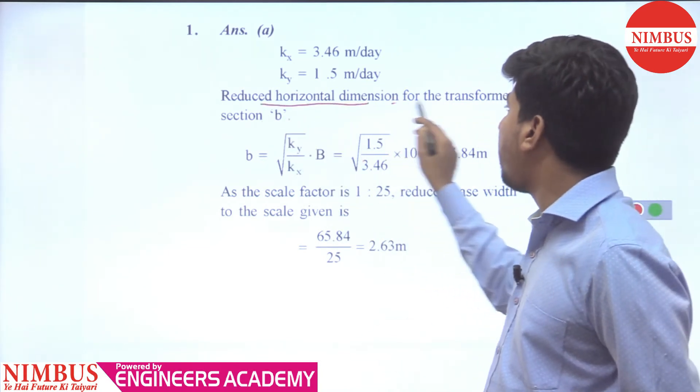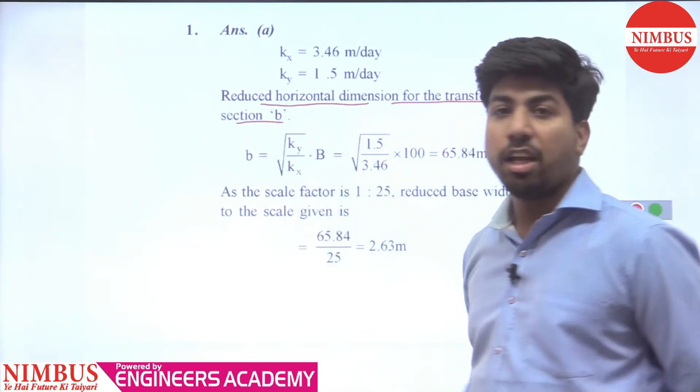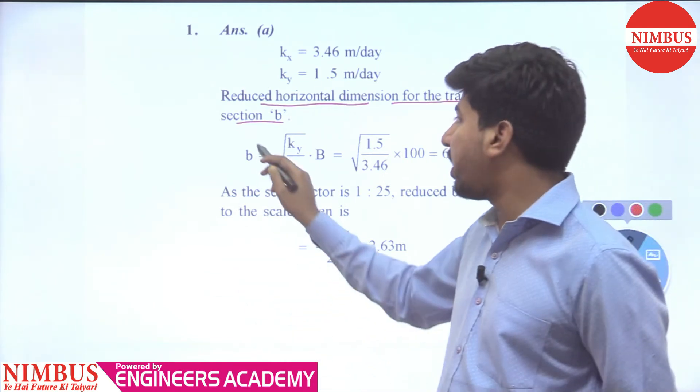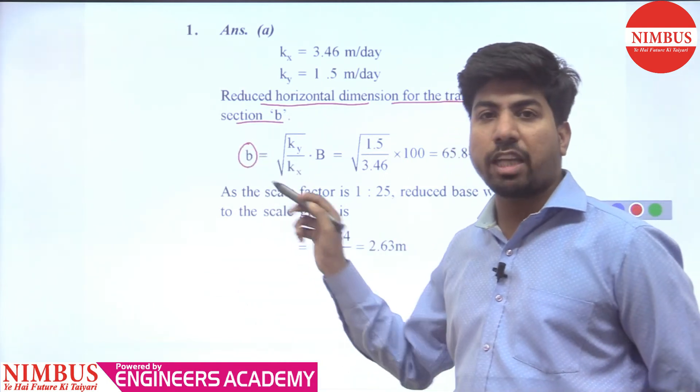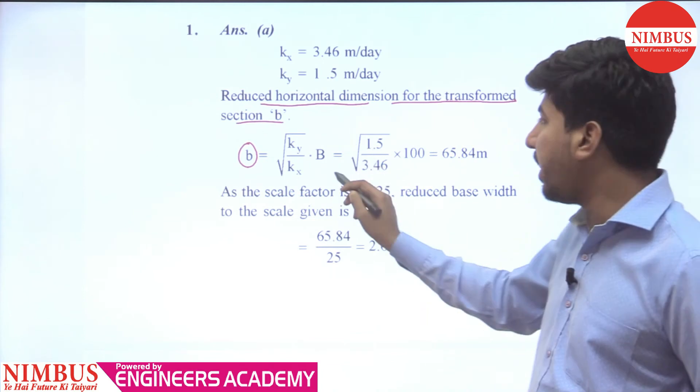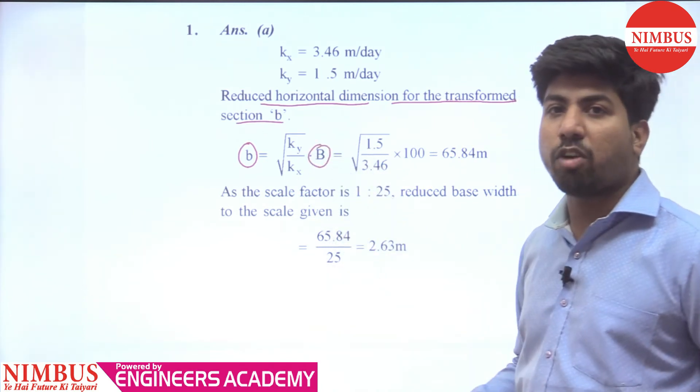The reduced horizontal dimension for the transformed section, the original dimension will be reduced. Then the reduced dimension is kx by ky under root into b. Into b, which is the baseline, given as 100.